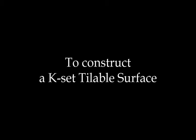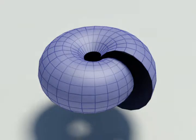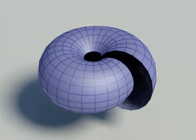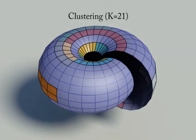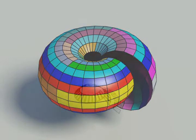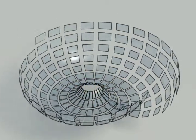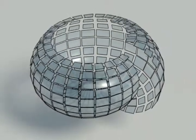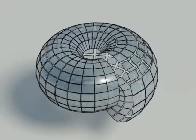To construct a k-set tileable surface from an input surface, if we cluster the surface quads and simply replace them with the mean shape in each cluster, the surface breaks, and the connectivity among the quads is lost.